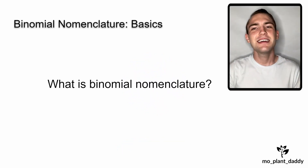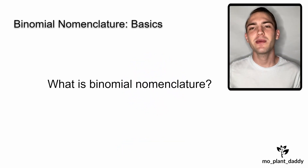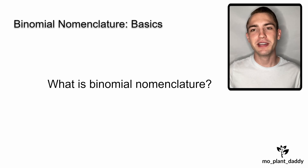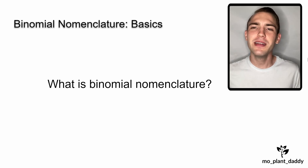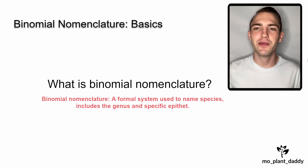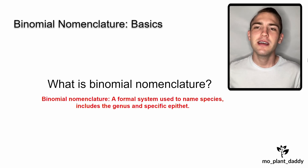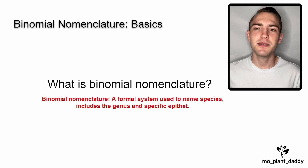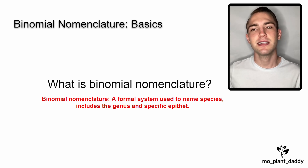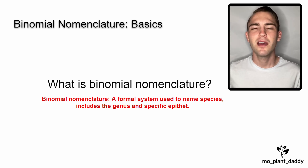Hi everyone! Today we are going to be talking about binomial nomenclature. But what is binomial nomenclature? Well, it's a formal system used to name species that includes their genus and specific epithet.